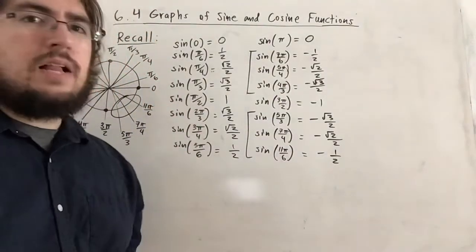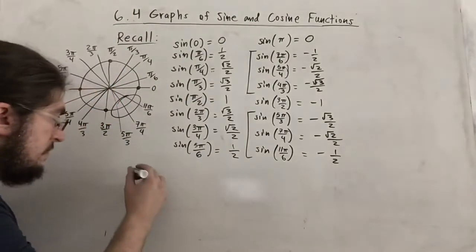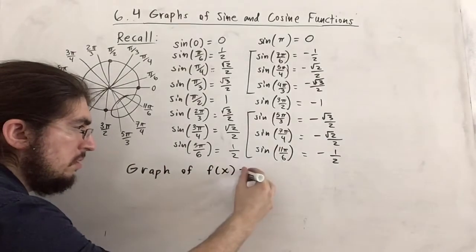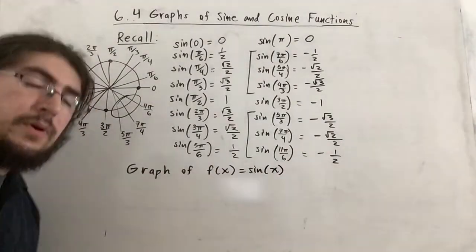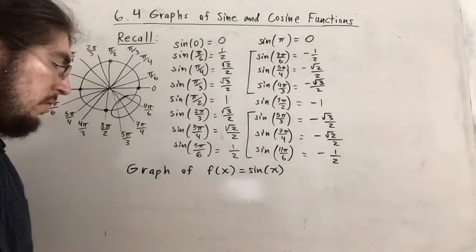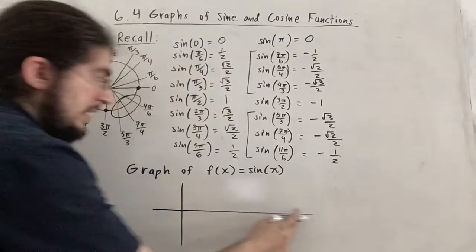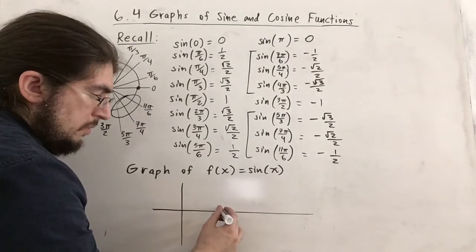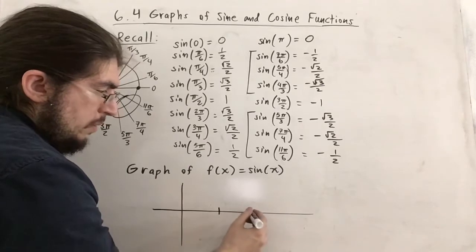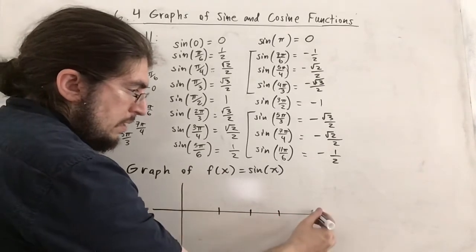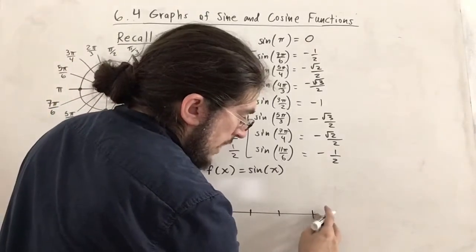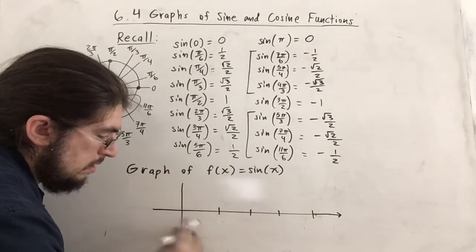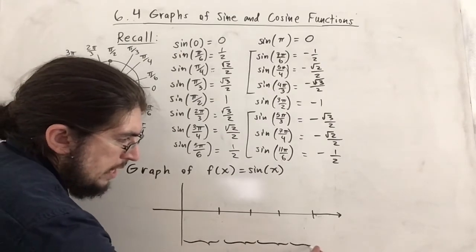Now with these values we want to graph the function f(x) = sine of x, where x is our input and sine of x is the y-value output. To scale the graph, each section represents one quadrant: the first quadrant spans 0 to π/2, the second from π/2 to π, the third from π to 3π/2, and the fourth from 3π/2 to 2π.